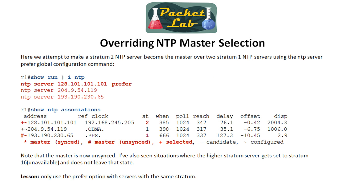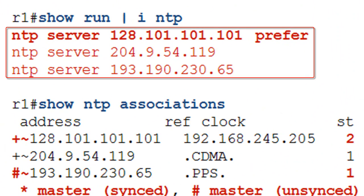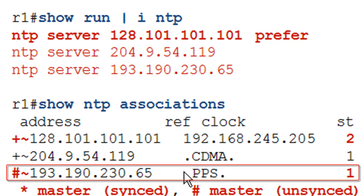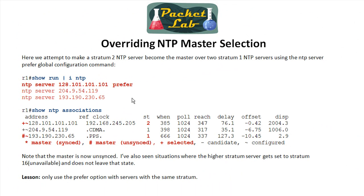In this case R1 is configured with three NTP servers — two stratum one and one stratum two. I say prefer the stratum two server, but when I show the associations we are still using the stratum one server. Interestingly, it has gone from a synced master to an unsynced master. You cannot override stratum this way, and it can actually mess up your NTP output, marking servers as unsynced.